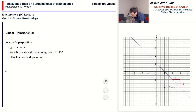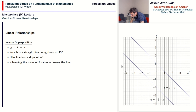The effect of changing the value of k is the same as for direct superposition: the larger the value of k, the higher the line. For example, comparing y equals 1 minus x (k equals 1) and y equals negative 2 minus x (k equals negative 2), you notice that as k goes from negative 2 to 1 — its value increasing — the line as a whole moves up.